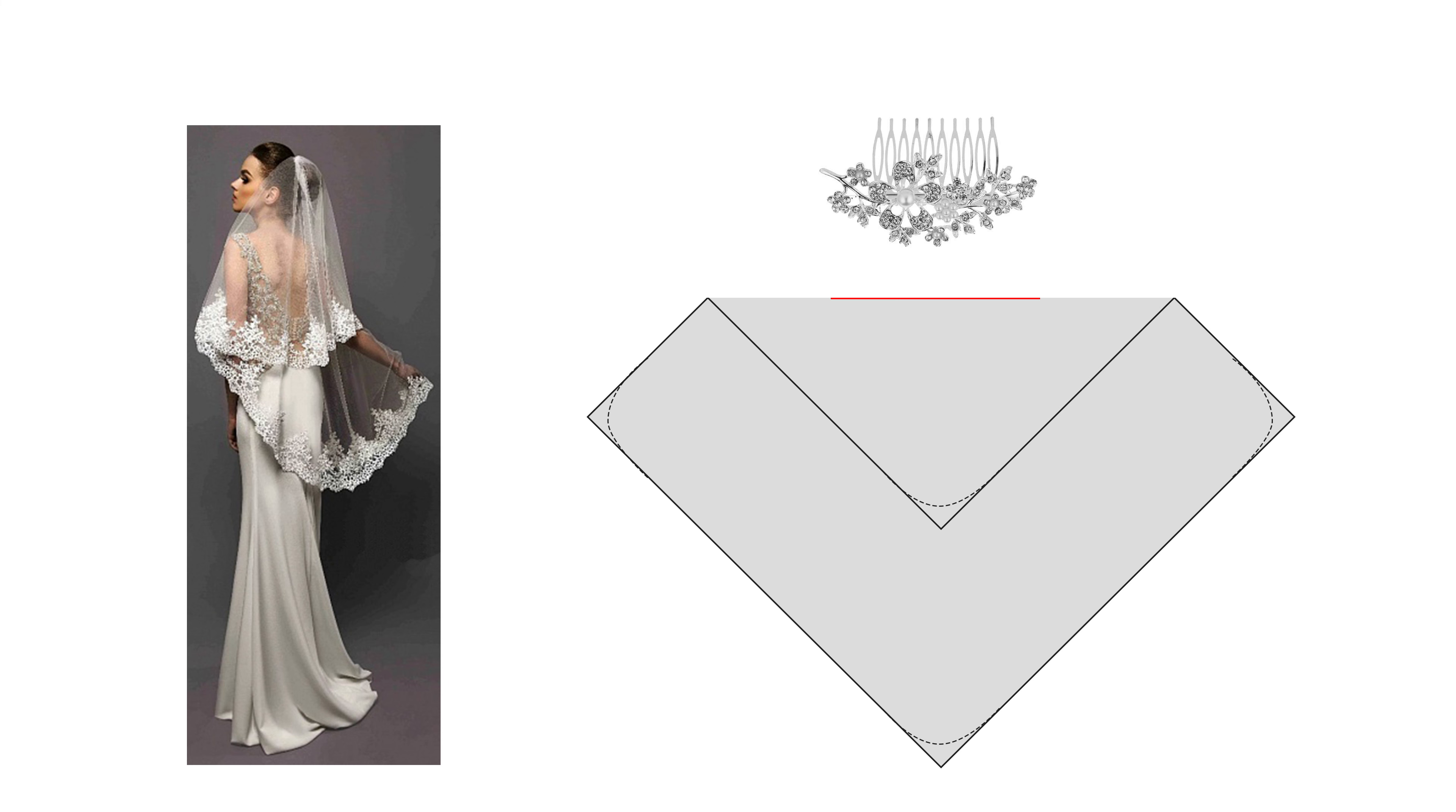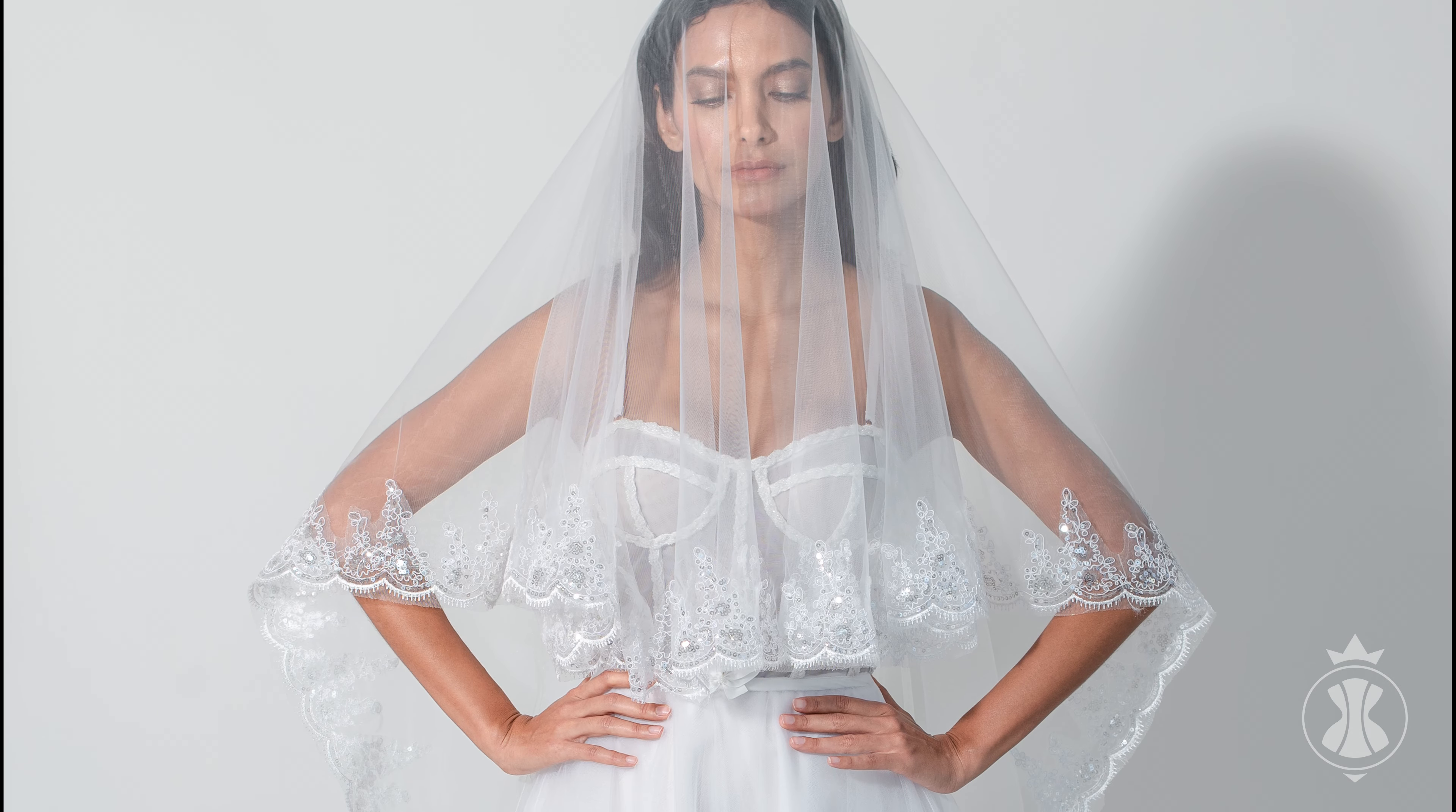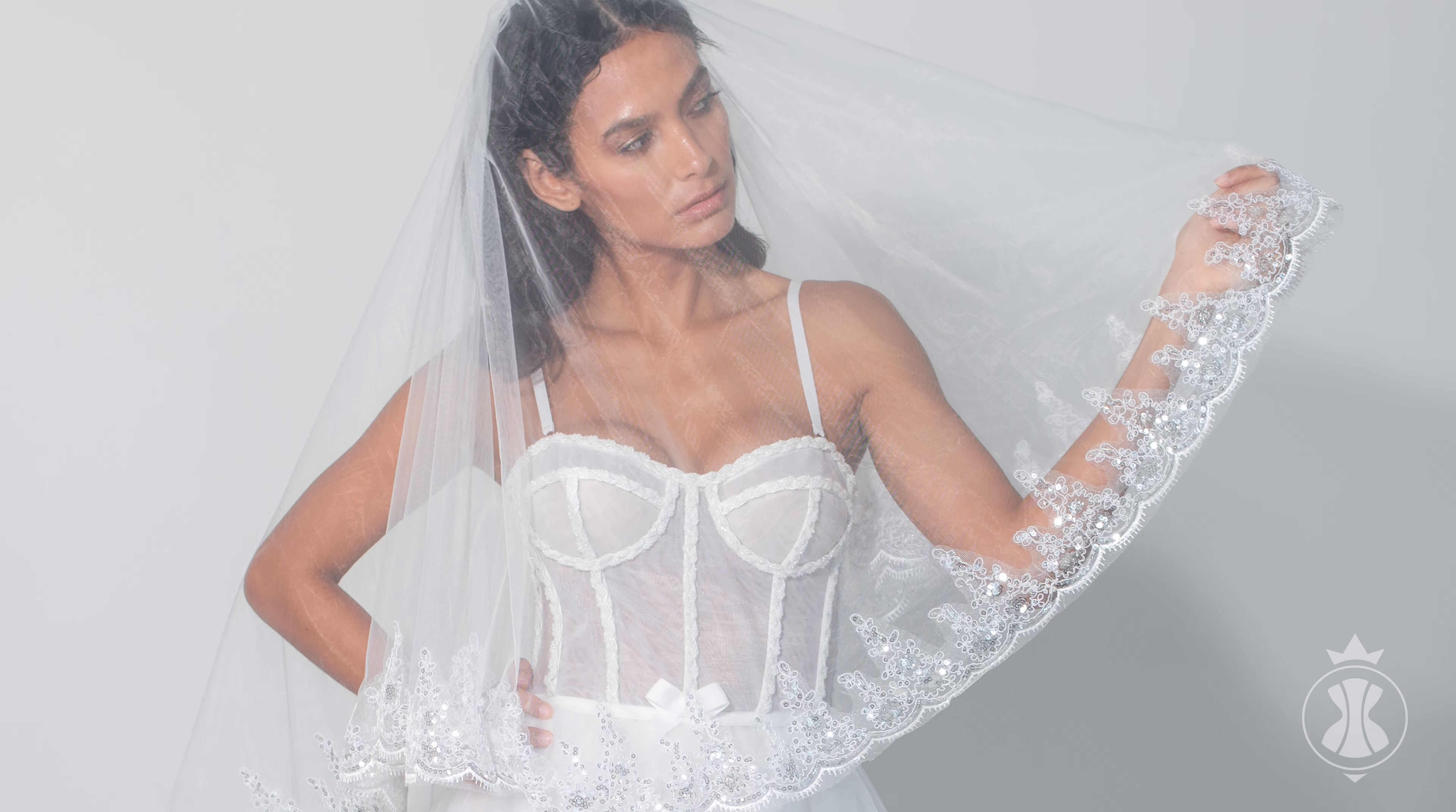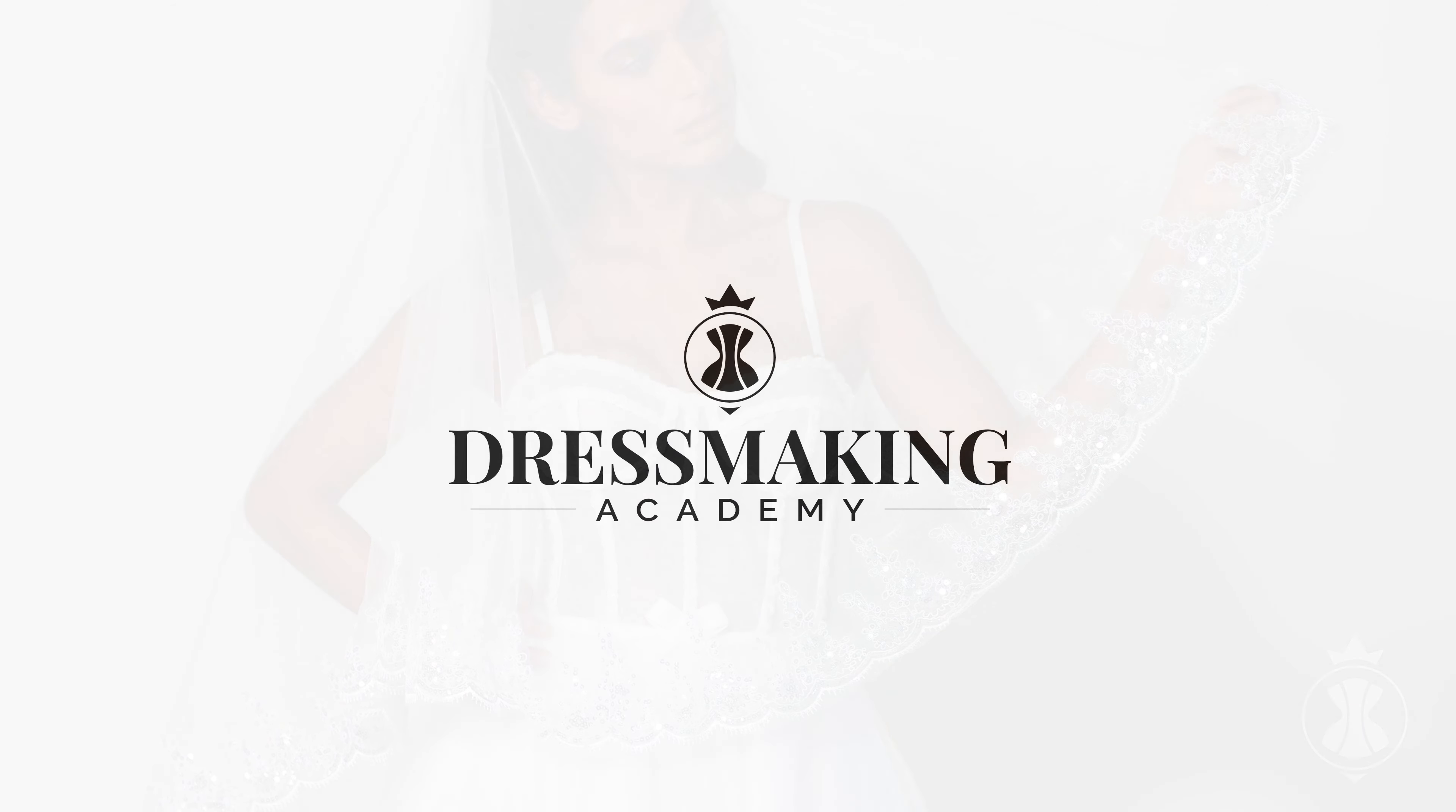To achieve a triangular shape, rotate the square by 90 degrees and fold the fabric at the attachment point of the comb. As you can see, it is actually very easy to make this essential accessory. See you in the next tutorials!